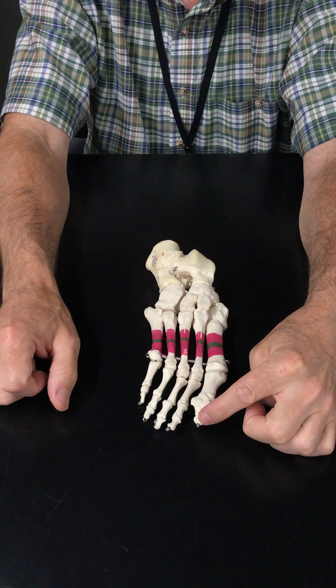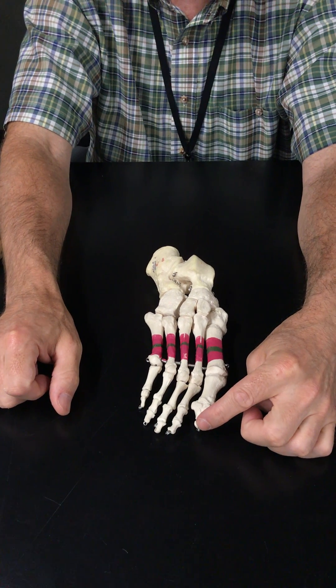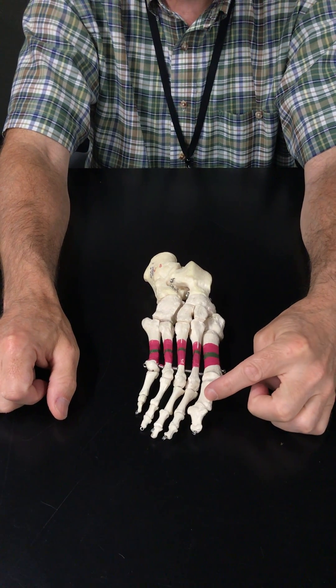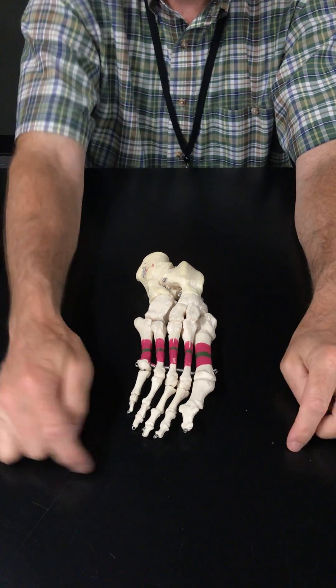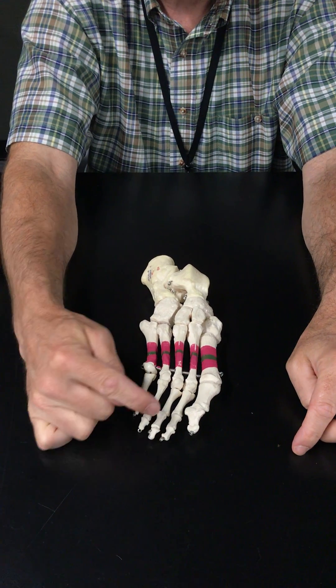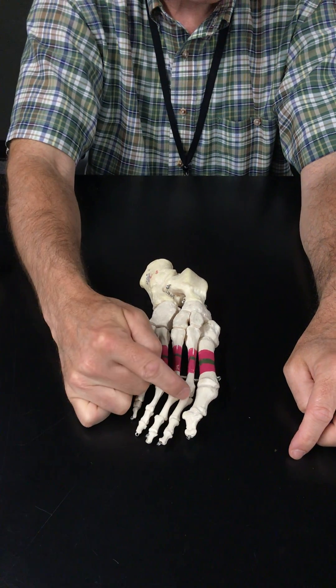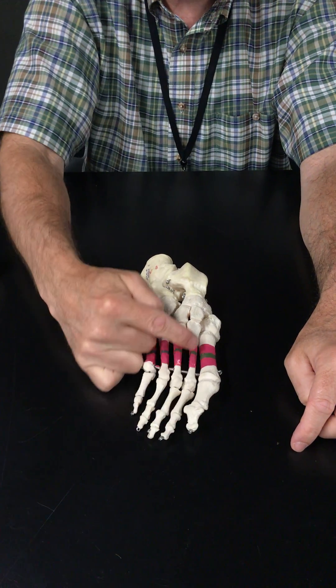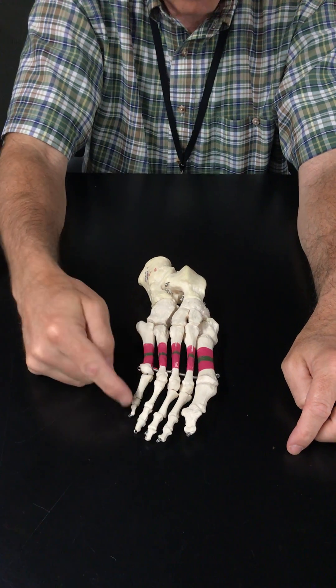So this is the first distal phalange of the foot, first proximal phalange of the foot, second distal, second middle, second proximal phalange, third, fourth, fifth.